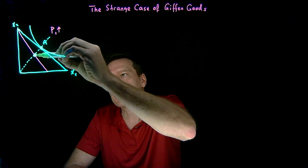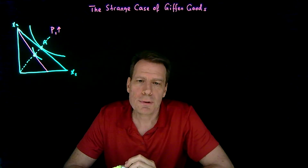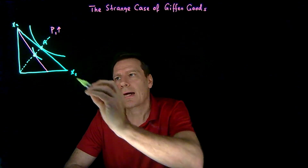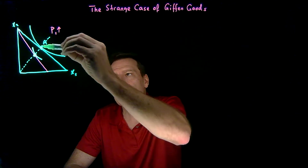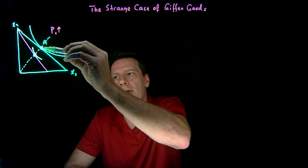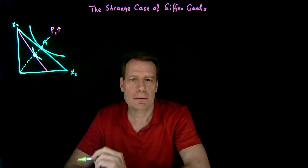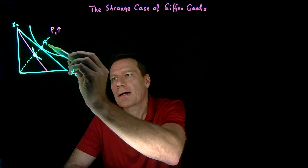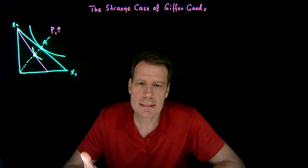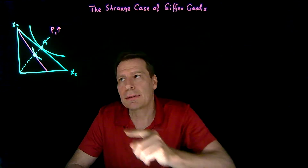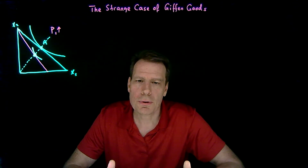If this is the new optimal bundle on the final budget, we'd have a tangency there. And if we have a tangency there, what that tells me is that the marginal rate of substitution is changing along that ray. We have a tangency with a shallow budget constraint at point A and a tangency with a steeper budget constraint at this new point. That must mean we have a different marginal rate of substitution here than we did there. But homothetic tastes are tastes where the marginal rate of substitution doesn't change along a ray from the origin.